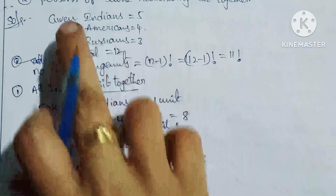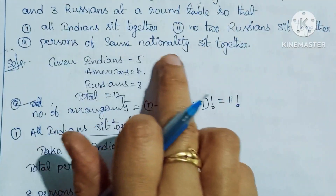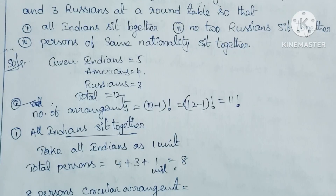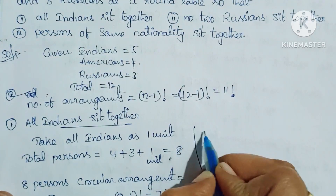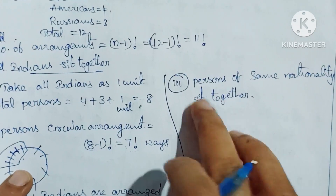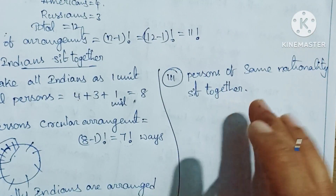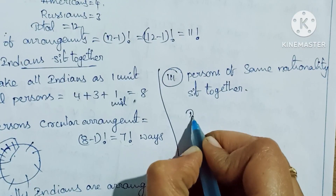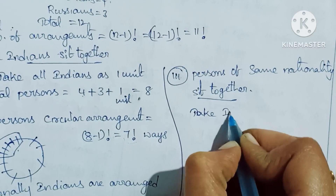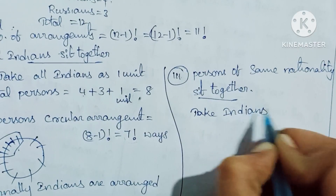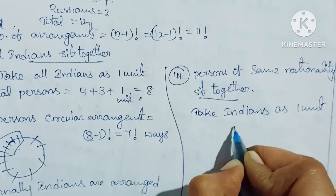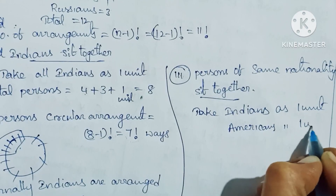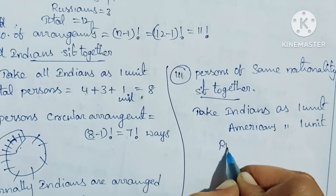Condition 3: Persons of same nationality sit together. Indians sit together as one unit, Americans sit together as one unit, and Russians sit together as one unit.